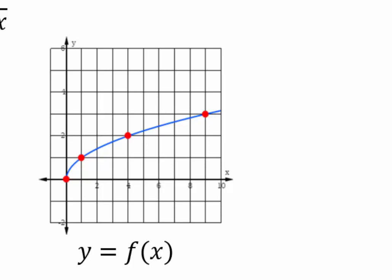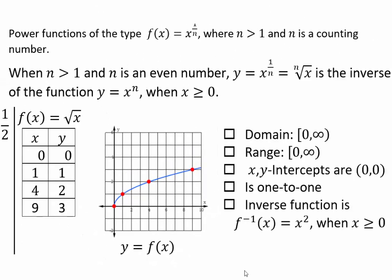And you can see that we have f of x equals square root x to have this graph. The domain would be 0 to infinity, range is 0 to infinity, x and y intercepts are 0, 0.